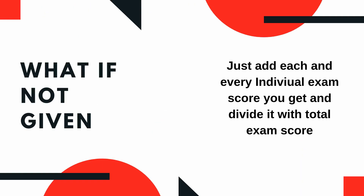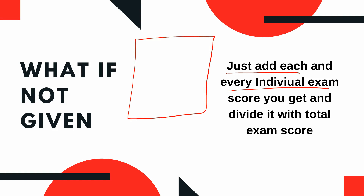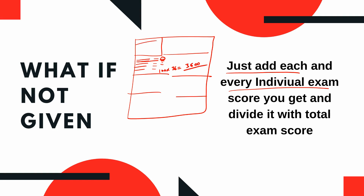If a formula is not given to you, what you do is add each and every individual exam mark. For example, in a 6-semester degree with 6 subjects per semester, that gives you 36 exams total, and if each exam is out of 100, the total comes to 3600.